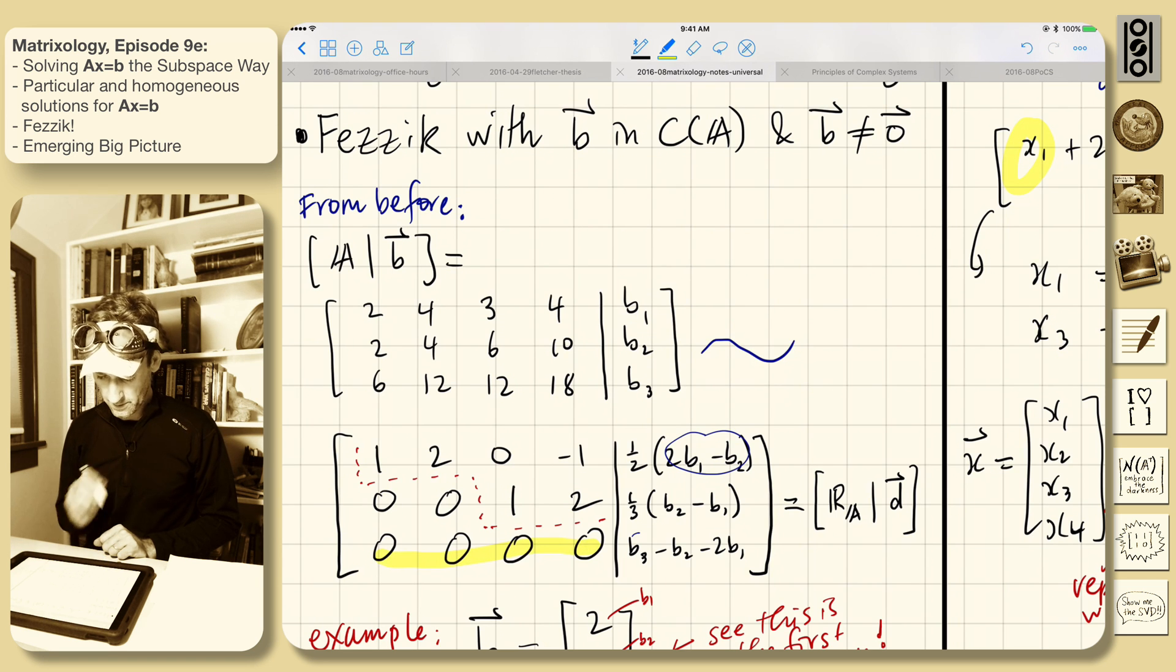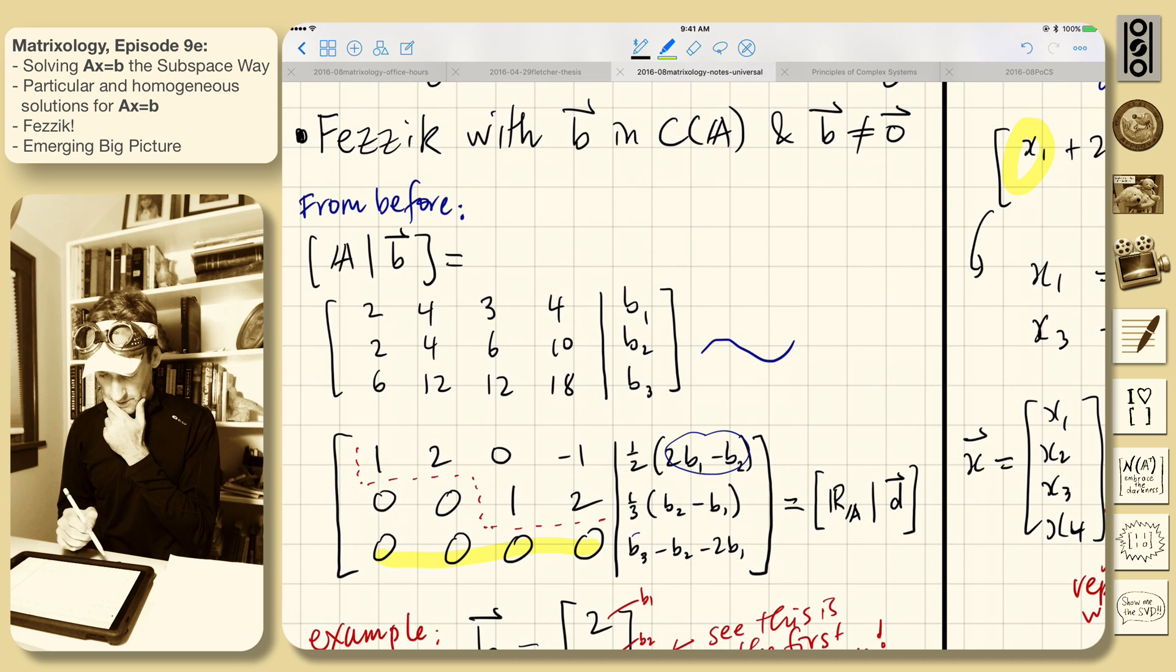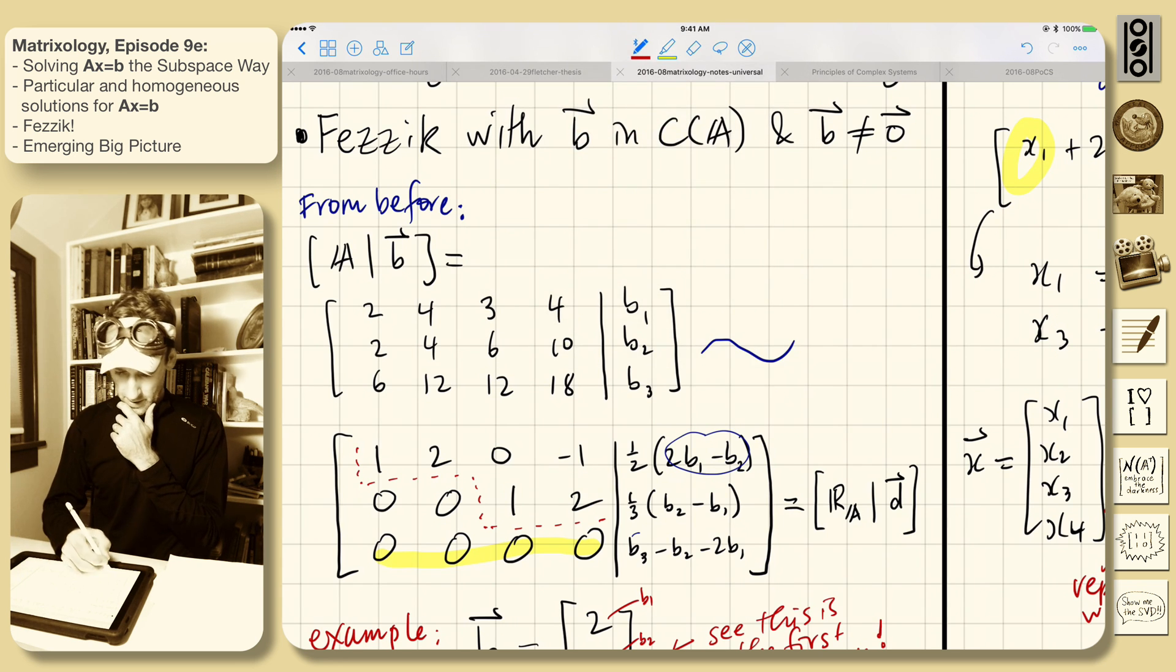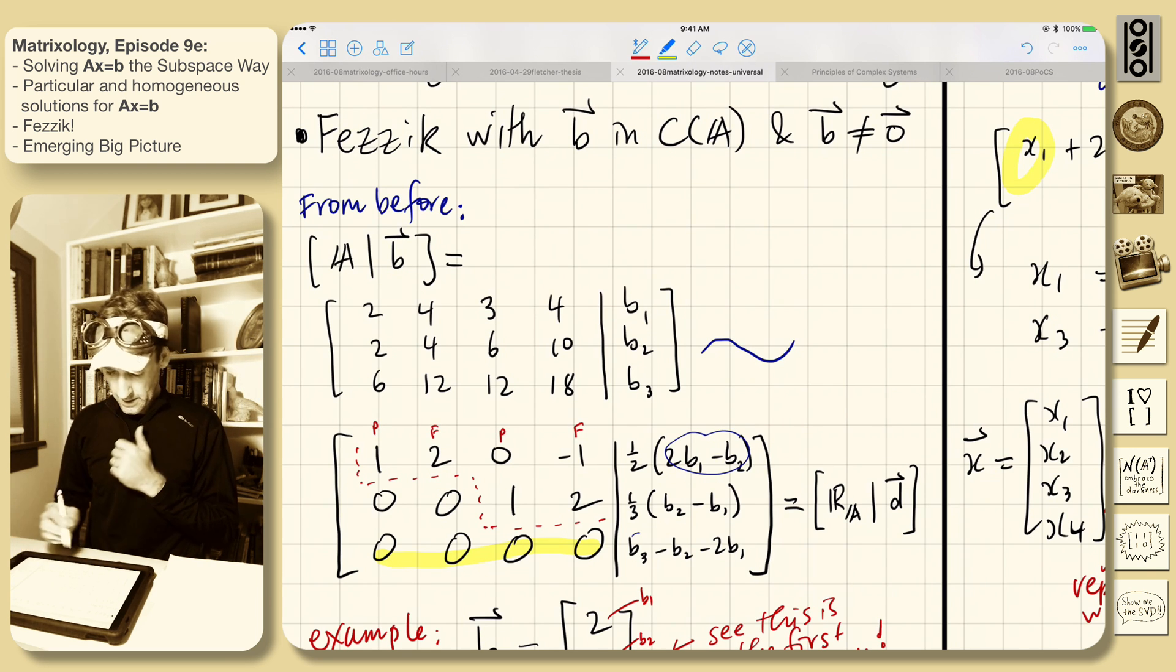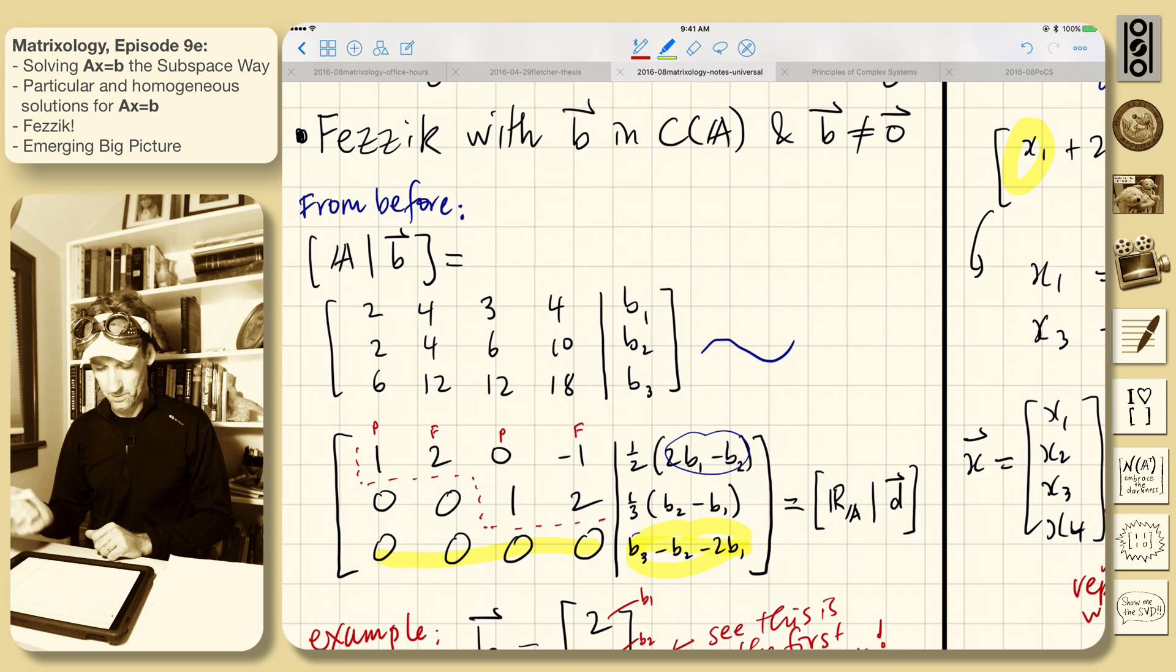All zeros across here after we've done the full reduced row echelon form. Here it is - we've got a pivot column, free, pivot, free. So we've got zeros along the bottom, and this was the story where we found column space because this piece had to equal zero.